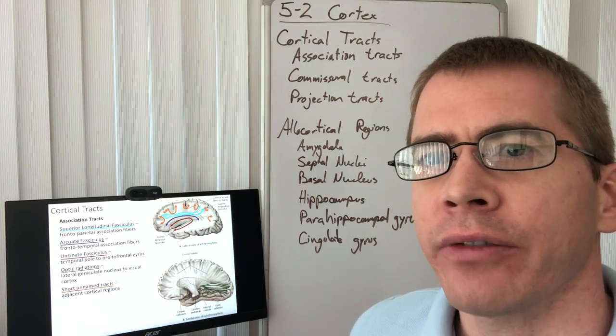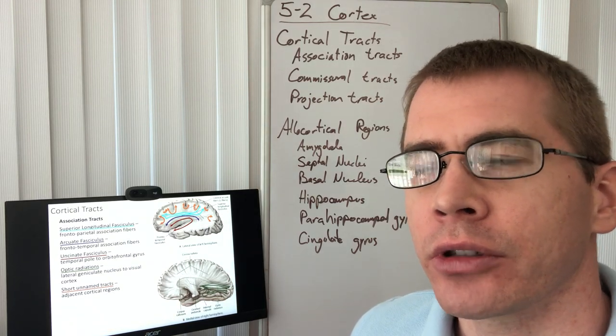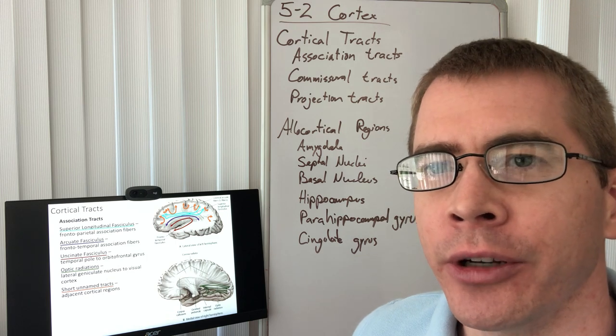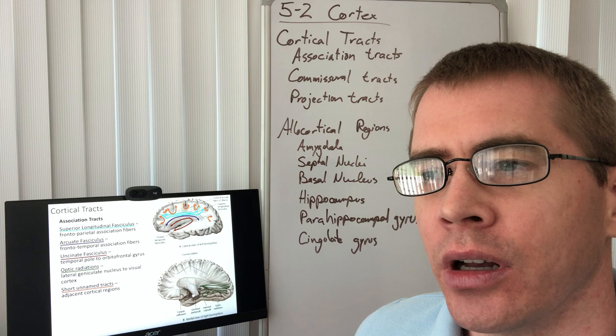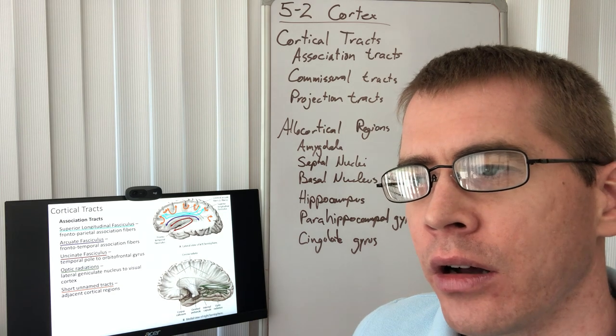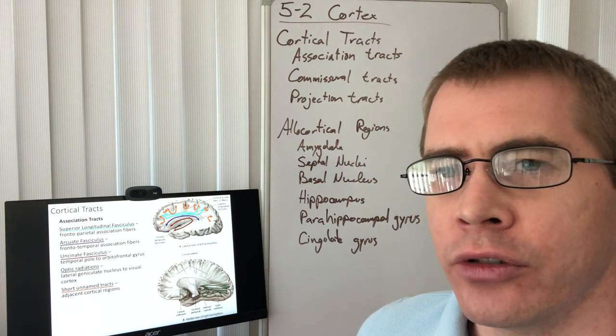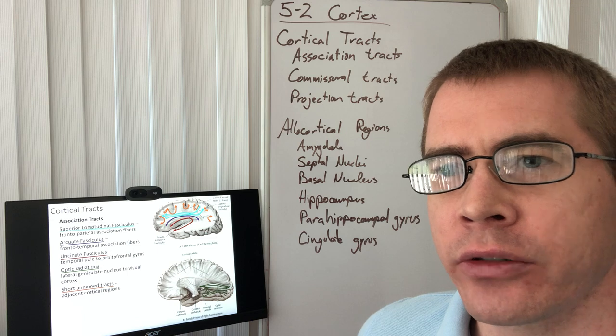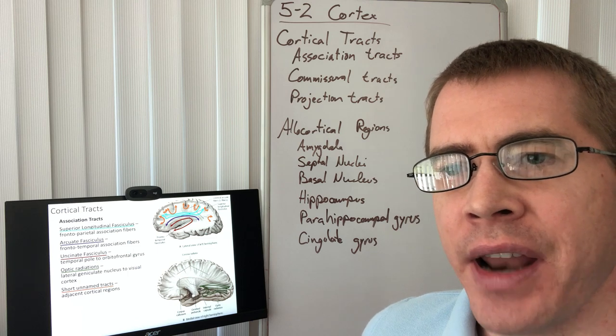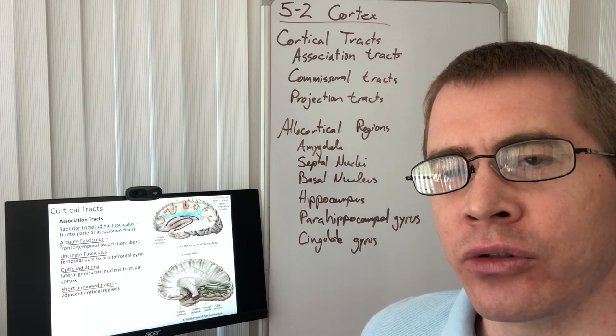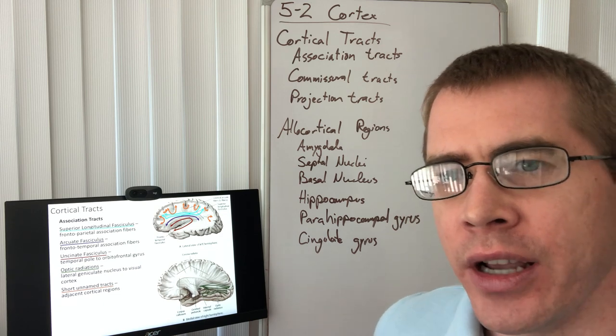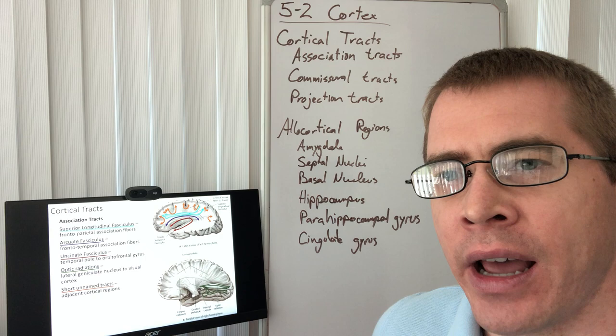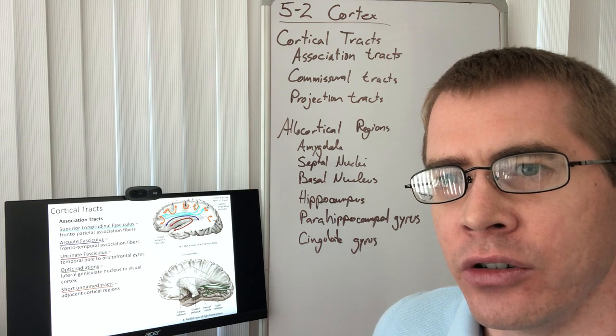Alright everyone, welcome to the second half of the 5-2 lecture, or second, third, or whatever it's going to end up being. So in the last lecture we talked about the association and commissural tracts, just kind of in theoretical terms, but there are specific named association and commissural tracts and other structures that we need to identify and talk about before we get any more in-depth about the functionality of the cortex.